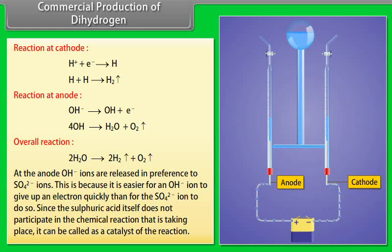At the anode, OH- ions are released in preference to SO4 2- ions. This is because it is easier for an OH- ion to give up an electron quickly than for the SO4 2- ion to do so. Since the sulphuric acid itself does not participate in the chemical reaction that is taking place, it can be called as a catalyst of the reaction.